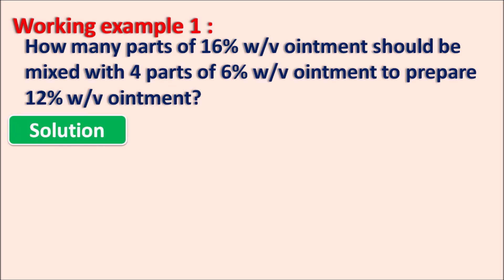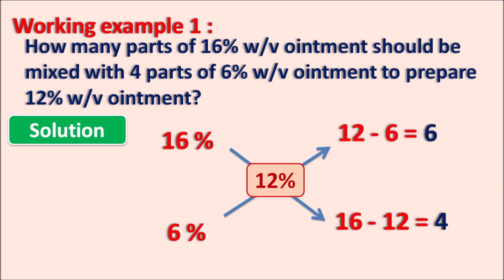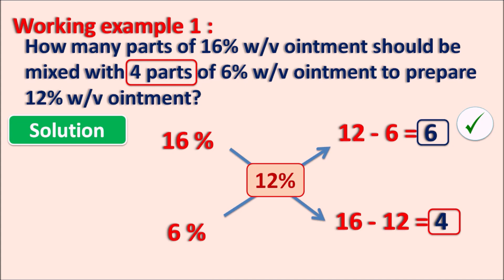Here we observe different concentrations: 16% and 6%, which are to be mixed to produce a 12% weight by volume ointment. Applying allegation: downward, 16 minus 12 = 4; upward, 12 minus 6 = 6. The allegation ratio is 6:4, or simplified, 3:2. Since 4 parts of the 6% ointment are already given, the 6% corresponds to 4 parts in our ratio, so the 16% ointment should be taken as 6 parts. Thus 6 parts of 16% ointment mixed with 4 parts of 6% ointment yields 12% ointment.